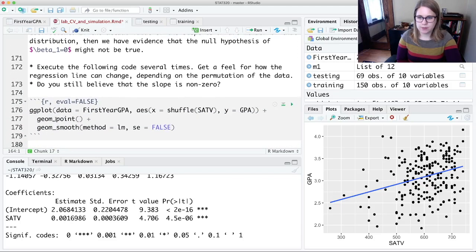So we're going to run some code here. This is the same code that I just did before. I'm doing a ggplot of the first year GPA data. The X is the SATV and the Y is the GPA, except I'm going to shuffle the SATV values.